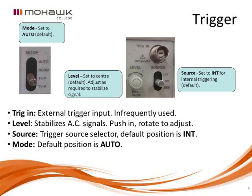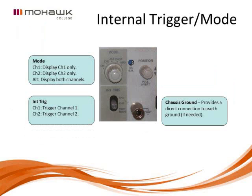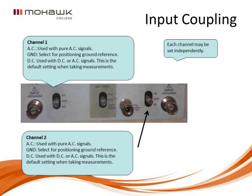The trigger inputs are used to determine the proper triggering for the scope. There are three main settings: the level, the source, and the mode. It's not necessary to master them right now — just know what they basically are. For the internal trigger mode, you can set it to display the trace of channel one only, channel two, or both. Internal triggering is typically what we'll use; external is used when triggering off the 60 Hz line frequency.